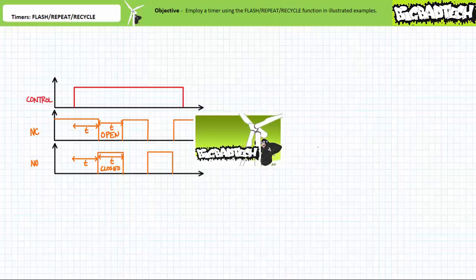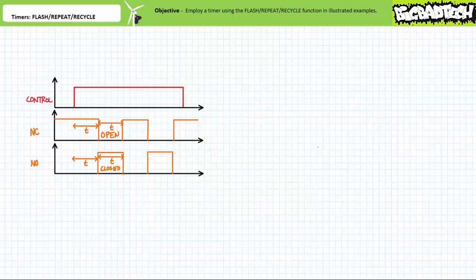This lecture operates under the assumption you've watched the previous timer functions lectures, all available at the Big Bad Tech channel. If you haven't watched these lectures yet or only dimly recall their contents, please take the time — pardon the pun — to do so now. Recall that a timer is a control device that exhibits a time-based shift between the assertion of its controlling input and the activation or deactivation of its associated contacts.